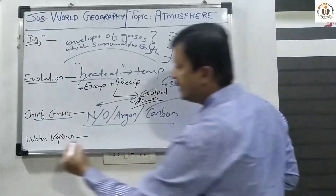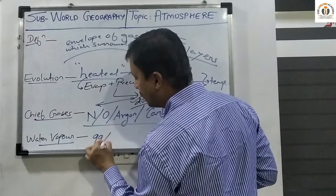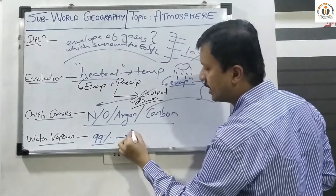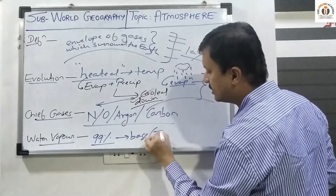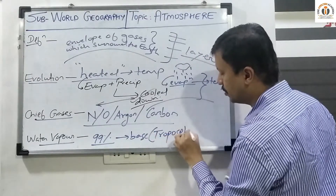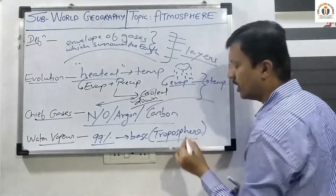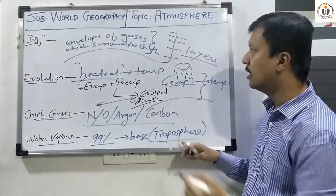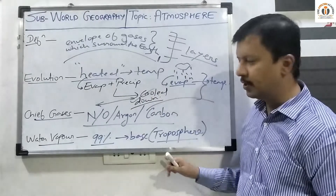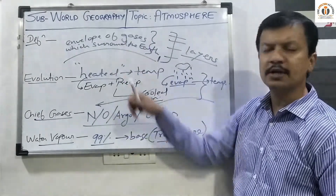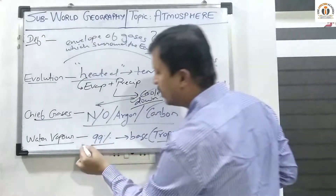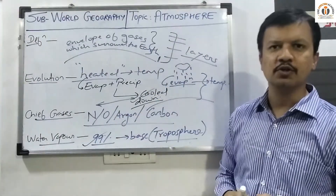About water vapor: 99% of the water vapor available in the entire atmosphere lies at its base, that is in the first layer — the troposphere — the layer in which humans and other living organisms survive. So 99% of the entire water vapor available in the atmosphere is found in the troposphere.